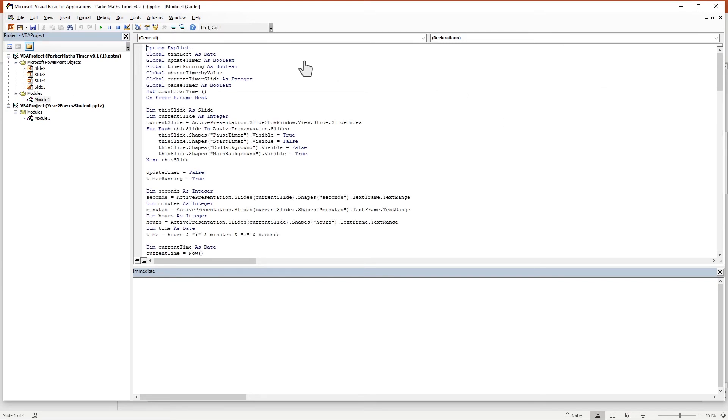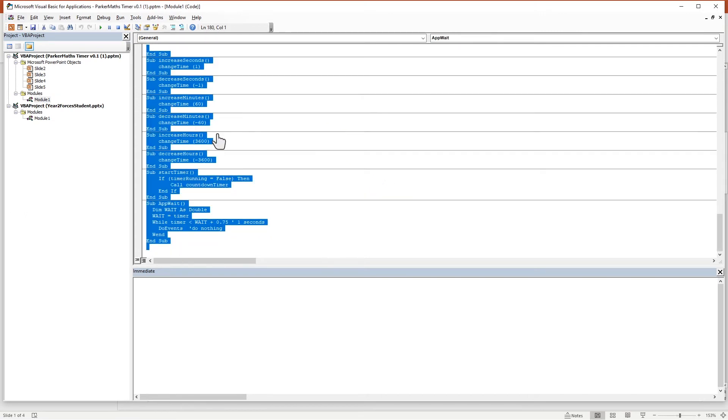Then we need to just copy all of this code. You don't need to read it, you can if you want, you don't have to. Click anywhere in here and then press Ctrl A to select all, and you can then press Ctrl C to copy it.